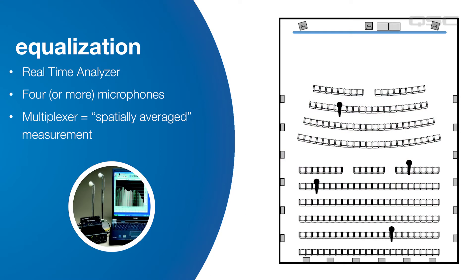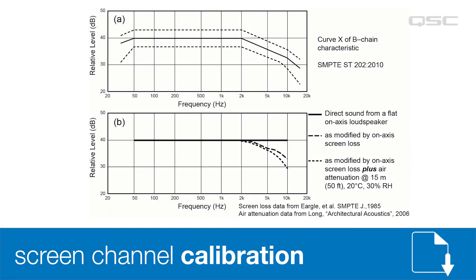The most common calibration tool used in cinema is the real-time analyzer, the RTA. Most RTAs use four or more microphones positioned in the seating area, a pink noise generator, and a multiplexer to create a spatially averaged measurement. For screen channel loudspeakers, response should approximate the industry standard X curve, which is defined in SMPTE standard 202. The X curve has plus and minus 3 dB tolerance. For a properly designed, well-behaved loudspeaker, the high frequency loss due to sound passing through a typical perforated screen, along with natural air attenuation, already approximates the X curve without the need for a lot of equalization.